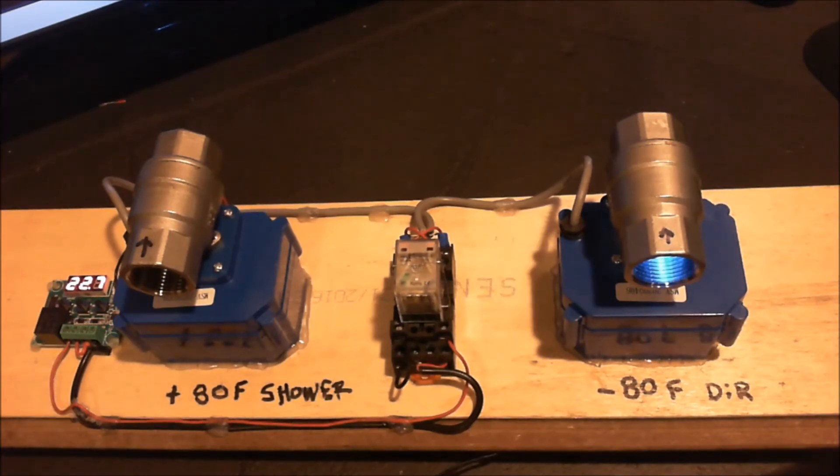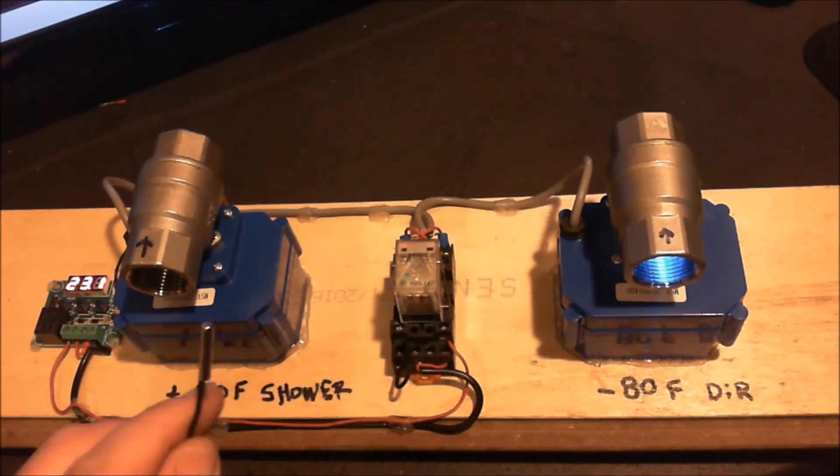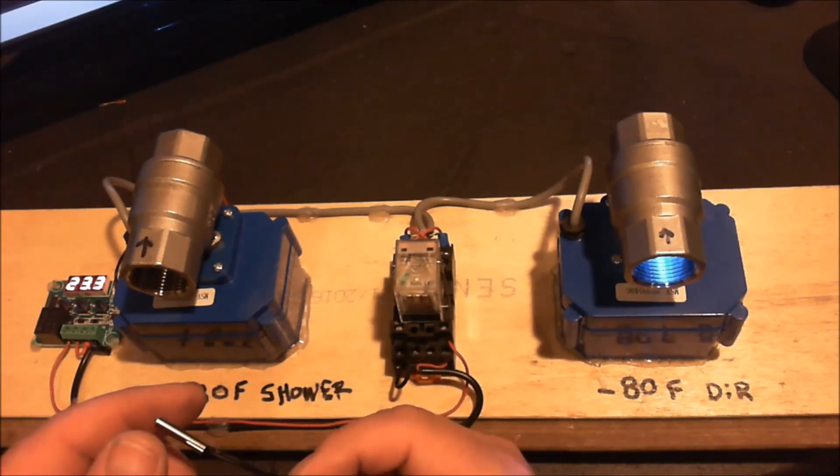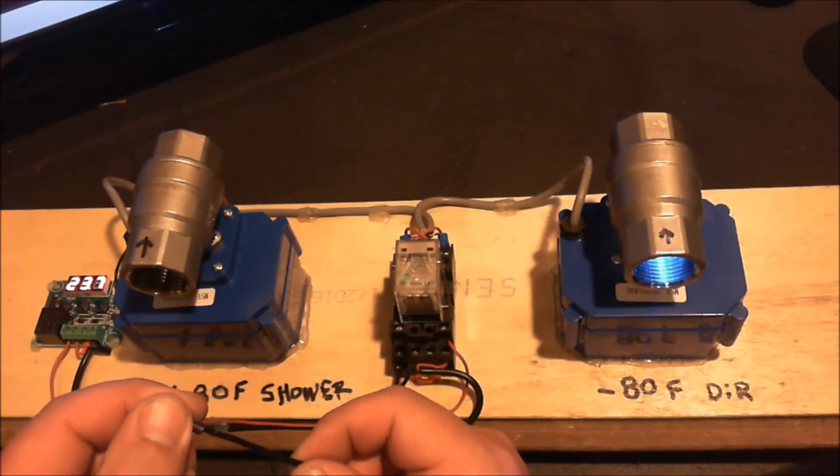So at 22 degrees Celsius, 72 degrees Fahrenheit, I am now going to bring the temperature of this thermistor up to above 26 degrees, 26.6 degrees Celsius, which is about 80 degrees Fahrenheit. I'm going to use my body temperature, 98.6 hopefully. You'll see the temperature rising to the left.